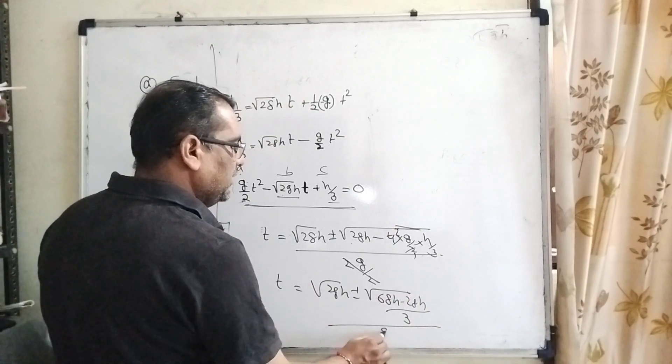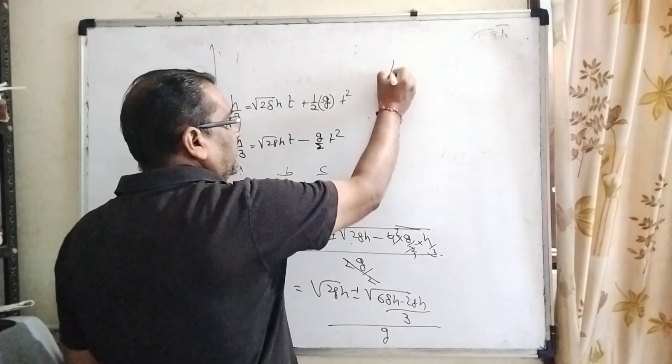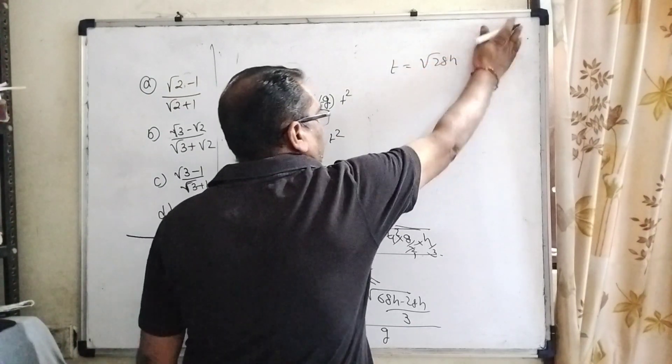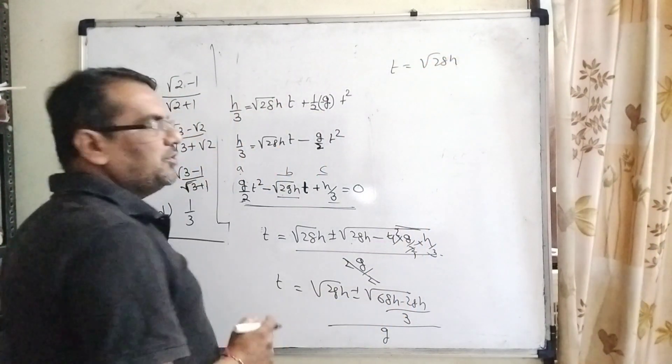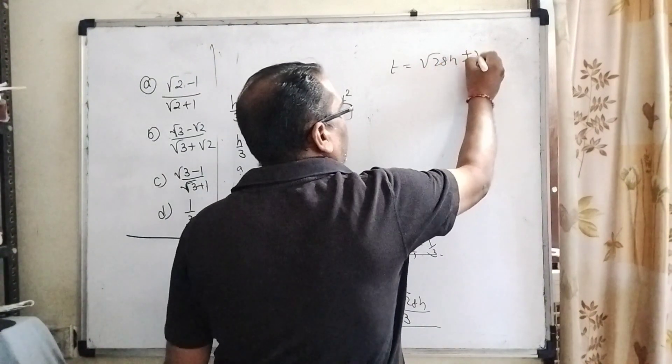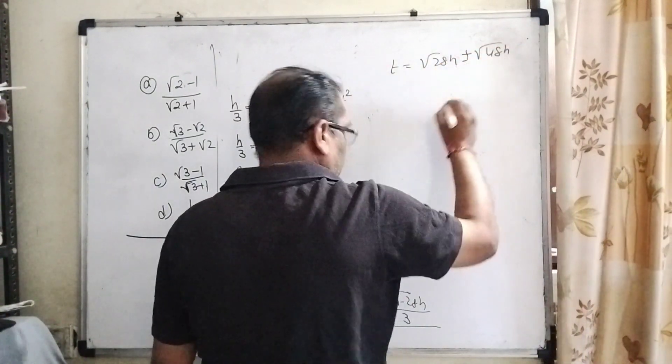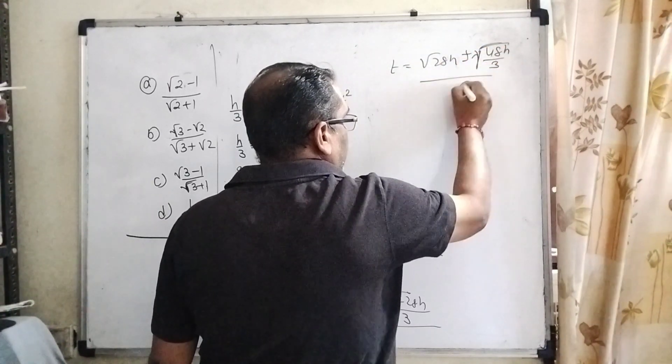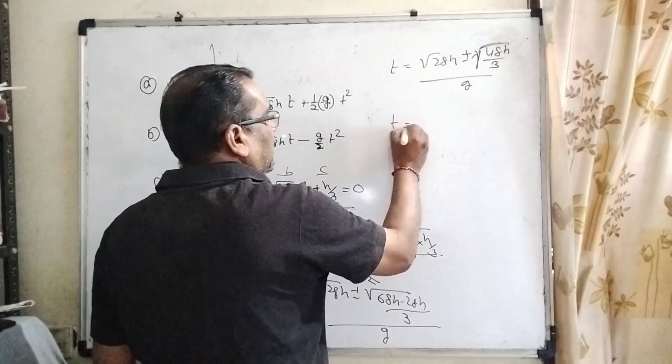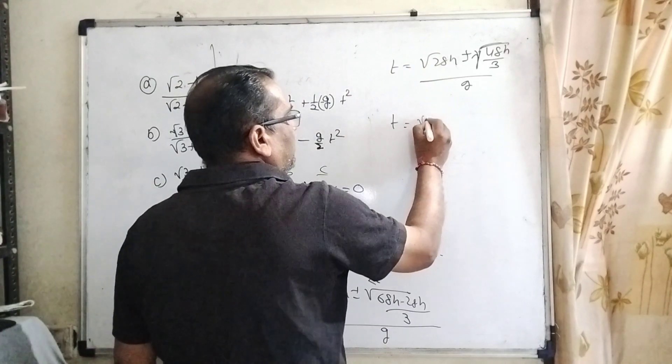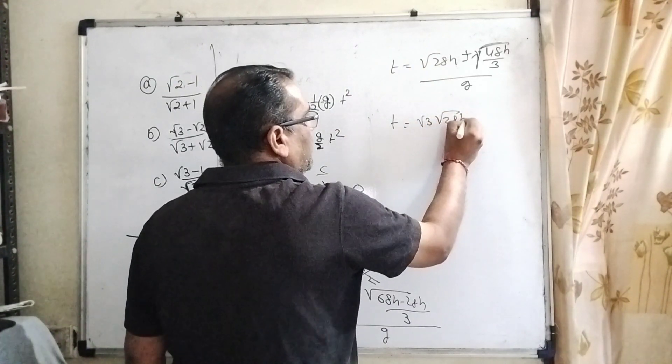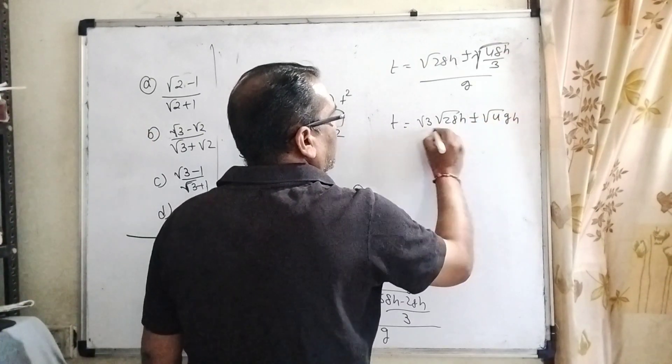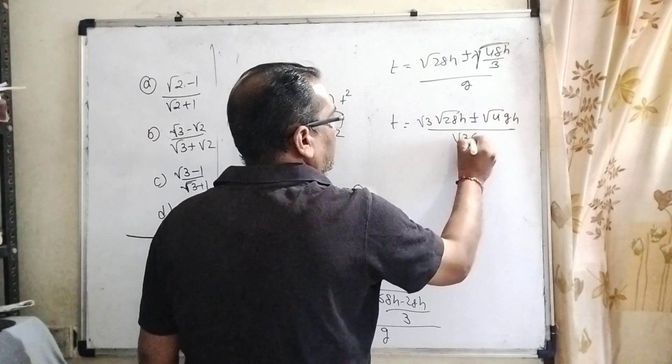Which becomes t = [√(2gh) ± √(4gh/3)] / g = [√(2gh) ± 2√(gh/3)] / g.